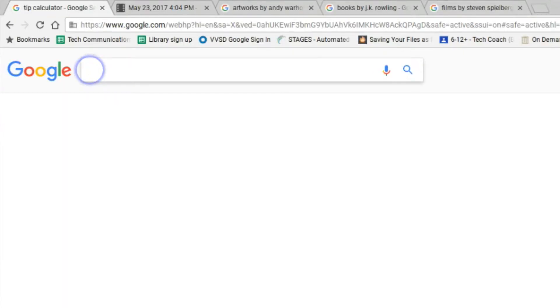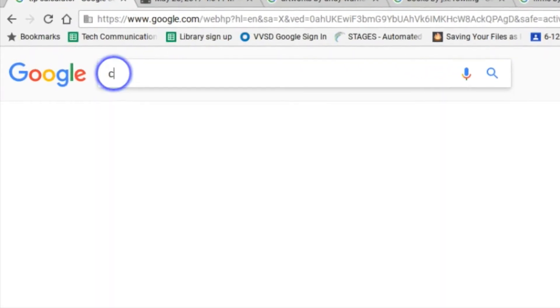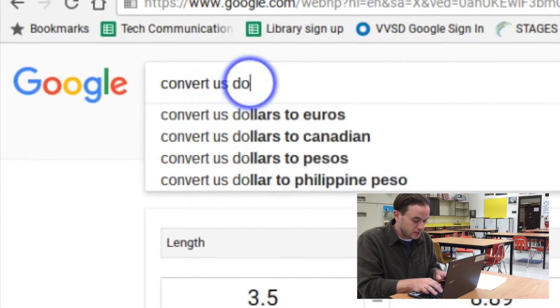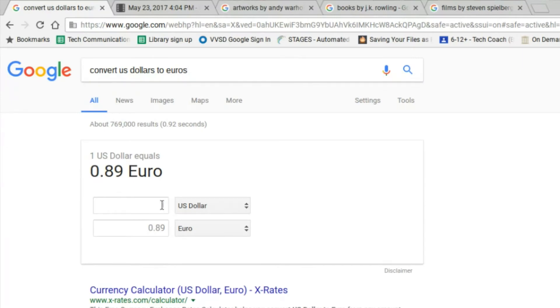Right from the Google homepage, you can convert almost any kind of unit that you want to. So if we wanted to convert currency, U.S. dollar to euros. So $1 is worth that much in euros. It even brings up the graph over several years, how well these two currencies have done against each other.